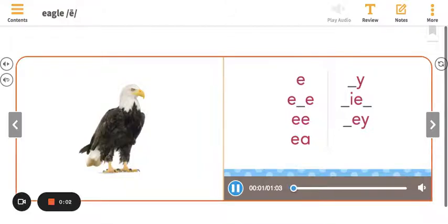Eagle. Eagle starts with a long ee sound, ee. The sound and the picture name are ee, eagle.